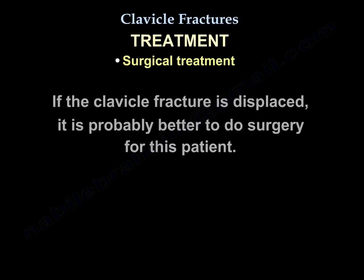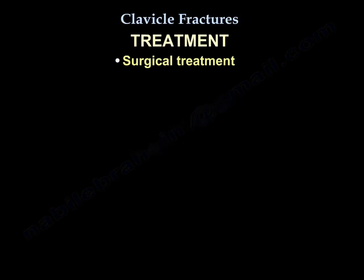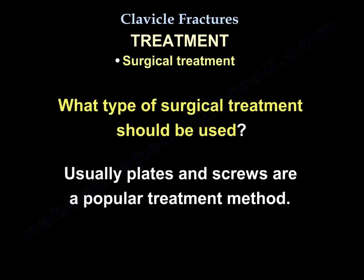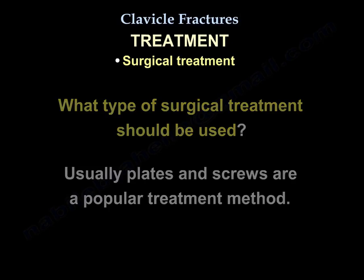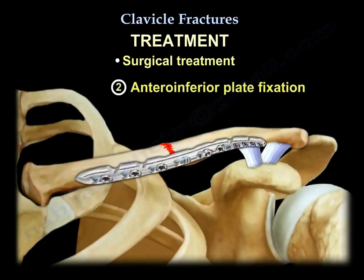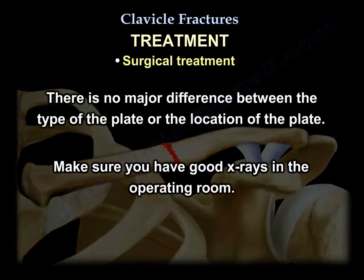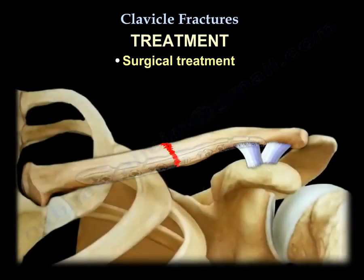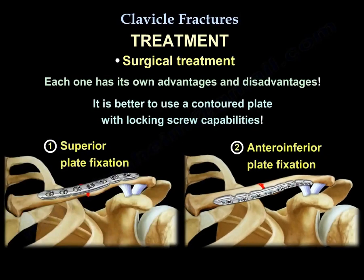Surgical treatment: if the clavicle fracture is displaced, it is probably better to perform surgery. Plates and screws are the most popular surgical treatment method. Plates can be placed in a superior or antero-inferior position. There is no major difference between the type or location of the plate. Make sure you have good X-rays in the operating room, as each plate has its own advantages and disadvantages. It is better to use a contoured plate with locking screw capabilities.